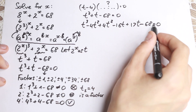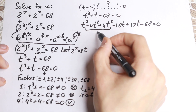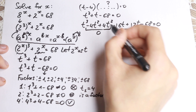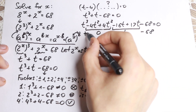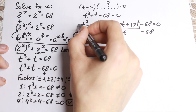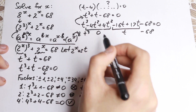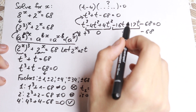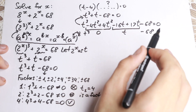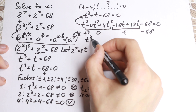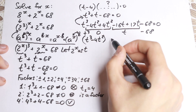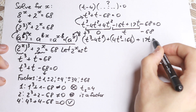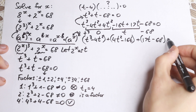Then I explain: negative 4t squared plus 4t squared equals 0, so nothing changed for us. Negative 16t plus 17t equals t, and t cubed stays. So this expression is the same as the beginning. But I know in my head I want to factor t minus 4. So let's group by two elements: first group t cubed minus 4t squared, second group 4t squared minus 16t, third group 17t minus 68.